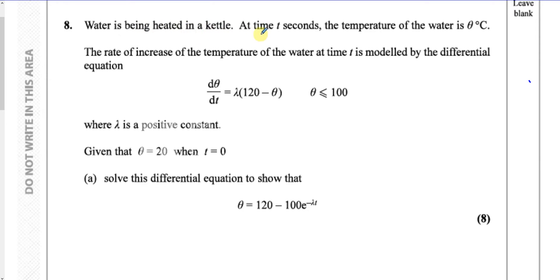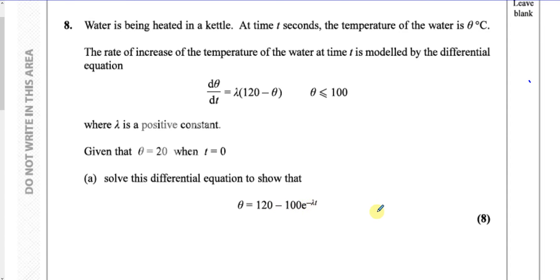Water is being heated in a kettle. At time t seconds, the temperature of the water is theta degrees Celsius. The rate of increase of the temperature is modelled by the differential equation dθ/dt equals lambda times (120 minus theta), where theta is less than or equal to 100, and lambda is a positive constant. Given that theta equals 20 when t equals 0, solve this differential equation to show that theta equals 120 minus 100 e to the power of minus lambda t.